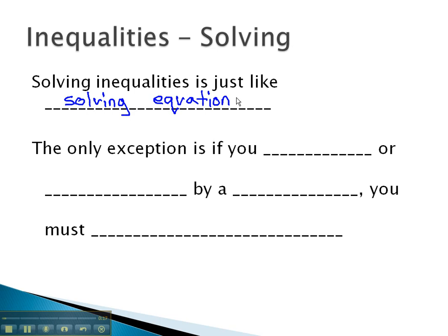We balance each side of the equation or inequality to get the variable alone. The only exception to this is if we multiply or divide by a negative. When you do, you must flip the inequality symbol.